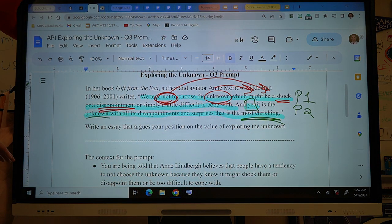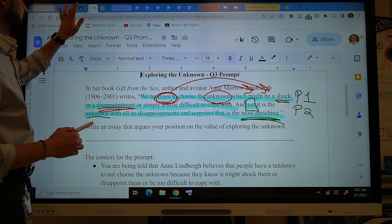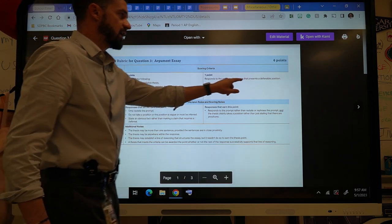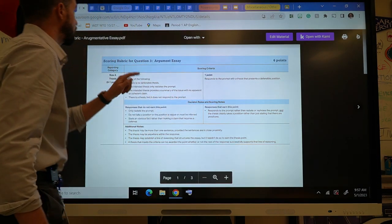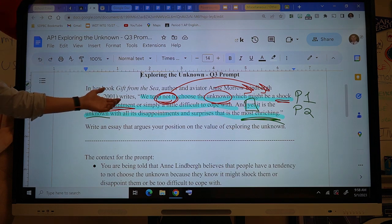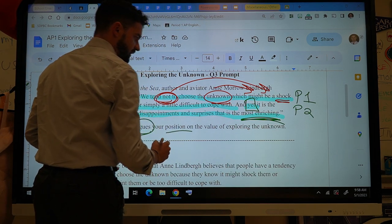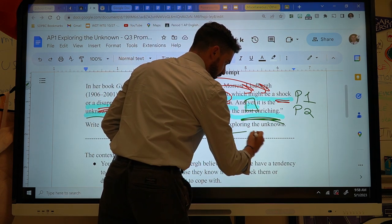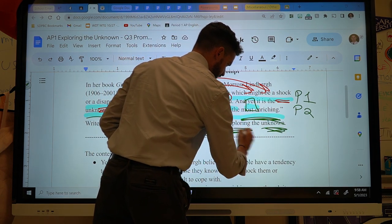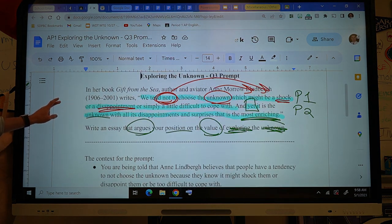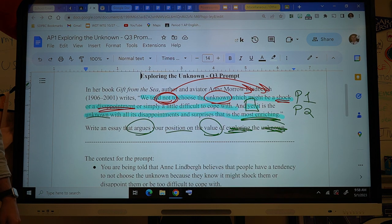So when you look at that and then you're trying to figure out according to the rubric and getting a one-on-one, like you have to take a position on this. So if you're taking a position on it, you have to argue your position on the value of exploring the unknown. Anytime I move it, it goes bonkers.